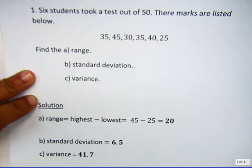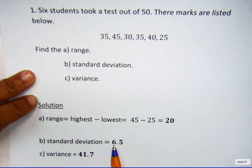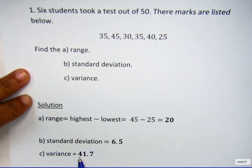So our standard deviation rounding off will be 6.5 and the variance is 41.7.